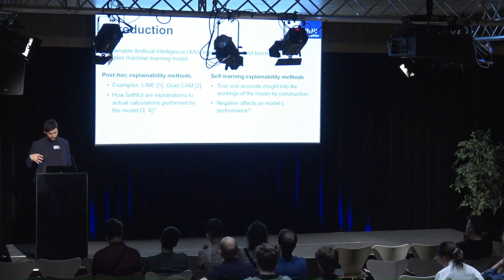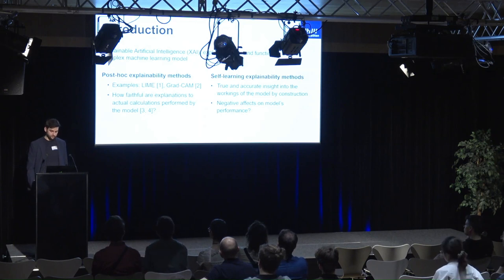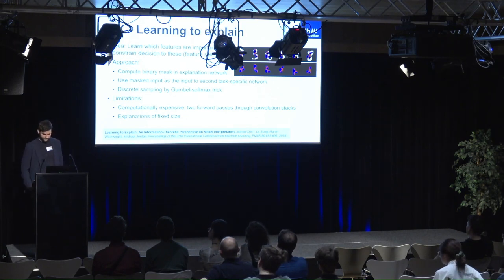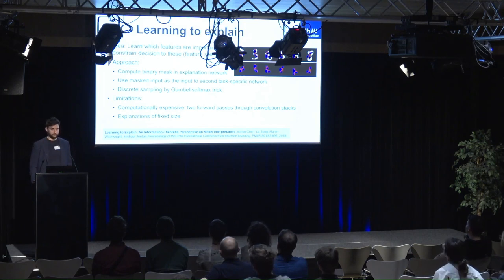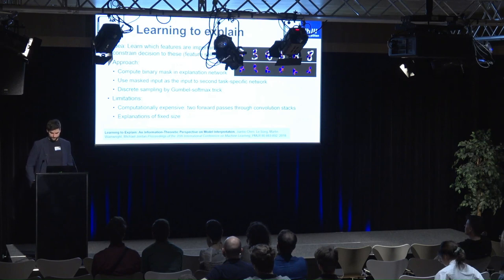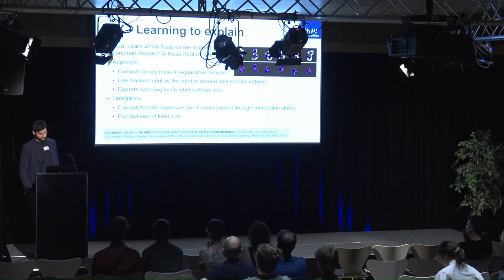We developed a self-learning explainability method and assessed the impact on performance. Our starting point was the method 'Learning to Explain' by Chen and colleagues. They introduced an approach based on two convolutional stacks: the idea is to learn a binary mask in a first explanation network, and then use those masked inputs in a second neural network for the classification task. For sampling they used the Gumbel Softmax trick, which we are not using, and I will show how we improved on that.